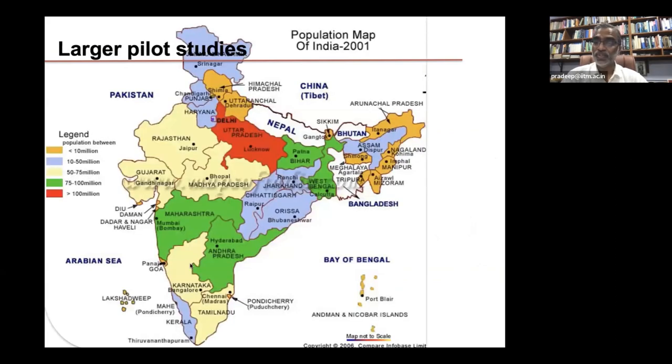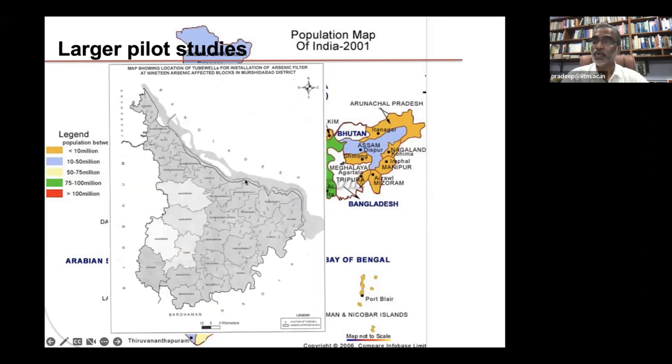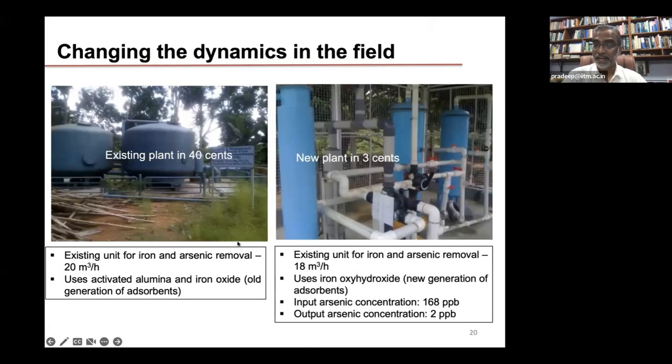You test it in the field in the form of a field test in West Bengal. And we extended that field study to an entire district shown here called Murshidabad. A hundred such community plants were installed in these locations and they were all giving satisfactory results. And it was taken to a larger field application.